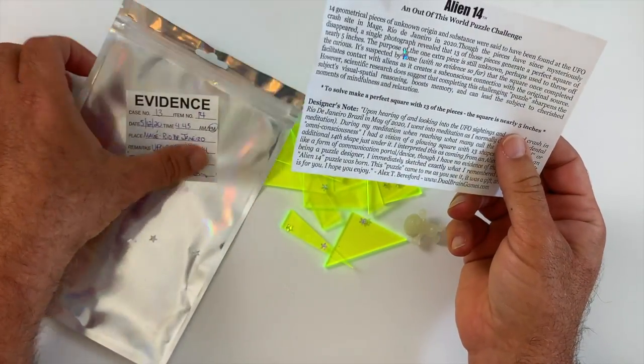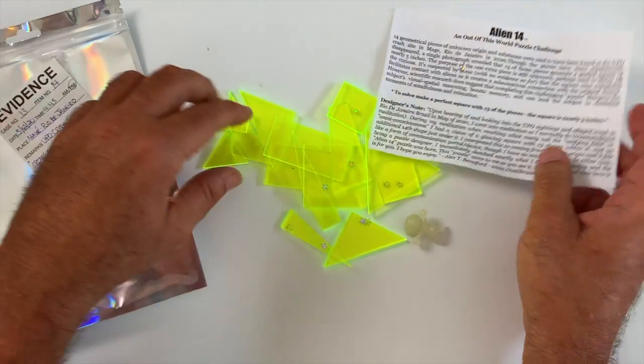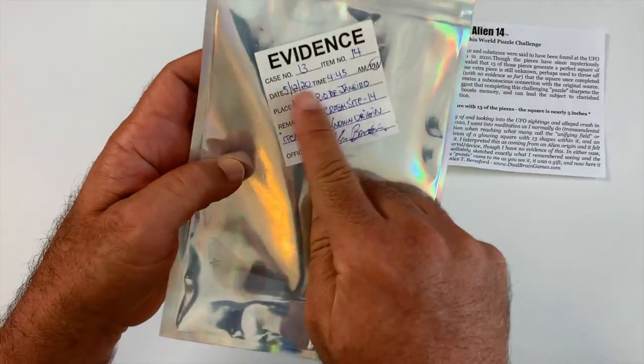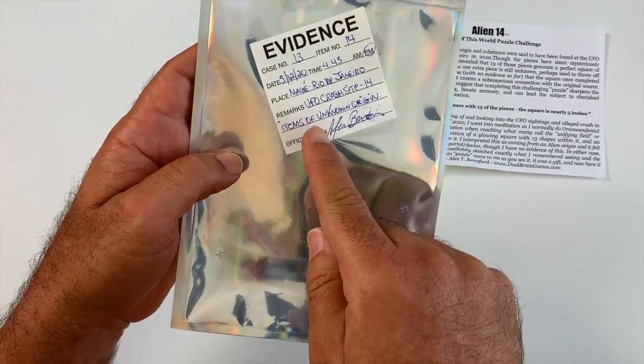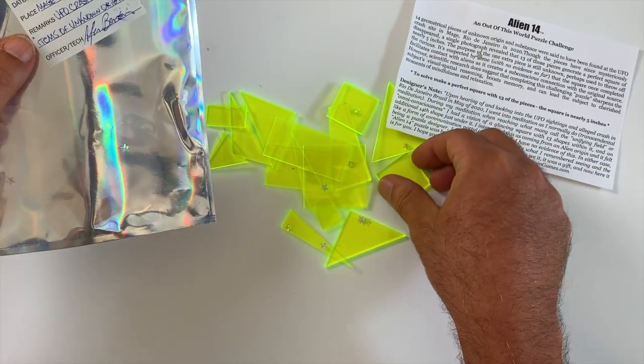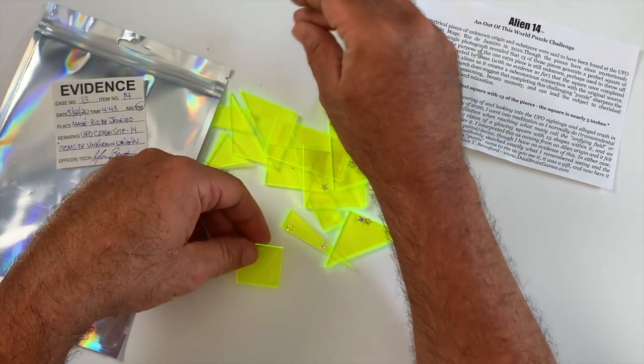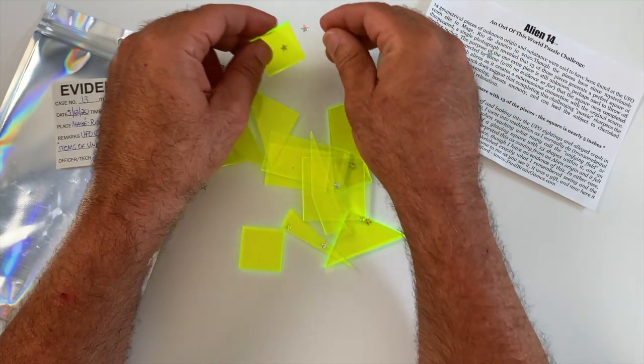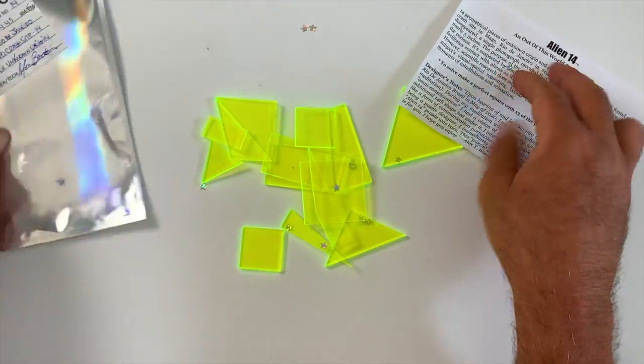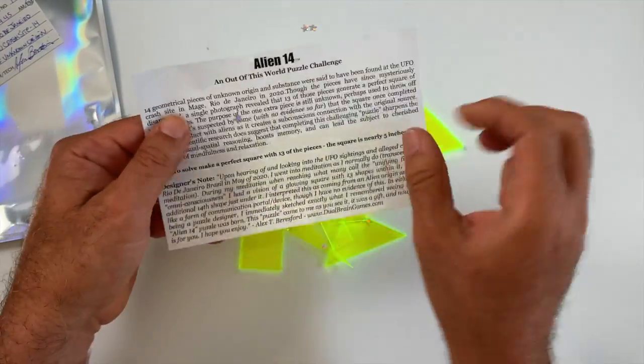It comes with this little glow-in-the-dark alien in this packaging here, which is evidence, right? Apparently these pieces were found in a UFO crash site. It's got these little stars in here as well which we'll just move away for now. And here are the instructions.